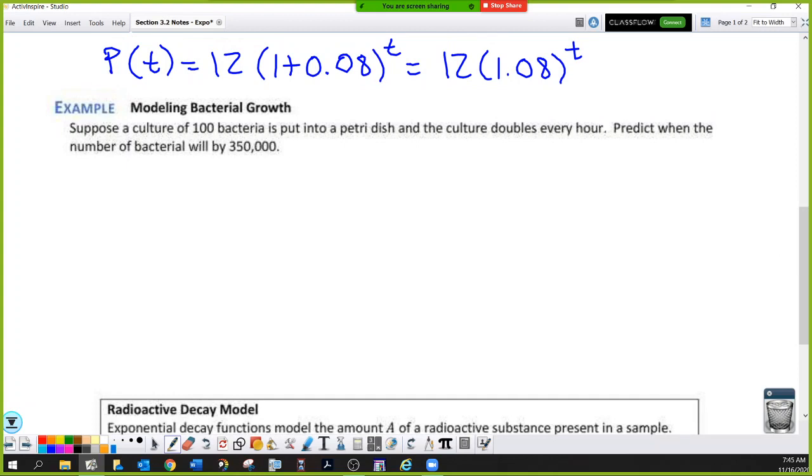Suppose a culture of 100 bacteria is put into a petri dish and the culture doubles every hour. Well, first of all, is this growth or decay? Obviously growth. But I know that P sub 0 is 100, but what is my rate? What is R? Is R 2? No, because R is the second power. So R is 1. And here's why R is 1. If I say the population doubled, that means it increased by 100%. If you started with 10, you needed another 10 in order to double. That is a 100% rate. So your R is 1, because this doubles every hour represents a 100% growth rate.